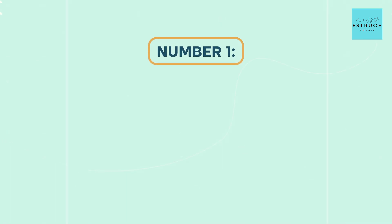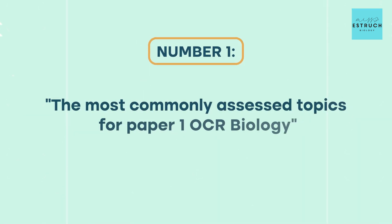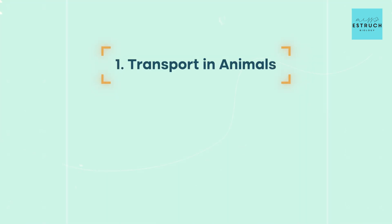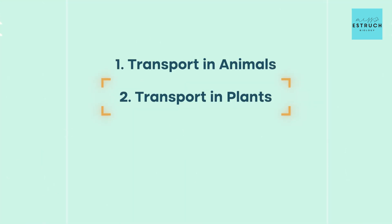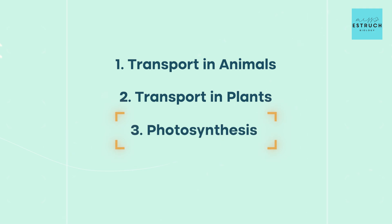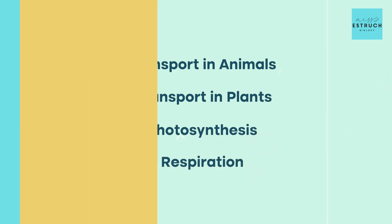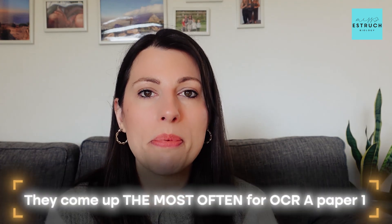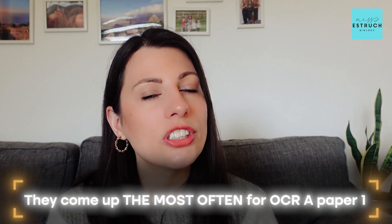Let's dive into the most commonly assessed topics for paper one OCR biology. Number one: transport in animals. Number two: transport in plants. Number three: photosynthesis. Number four: respiration. These are fundamental topics that come up most often for OCR A paper one, so make sure you have interleaved those into your revision multiple times.